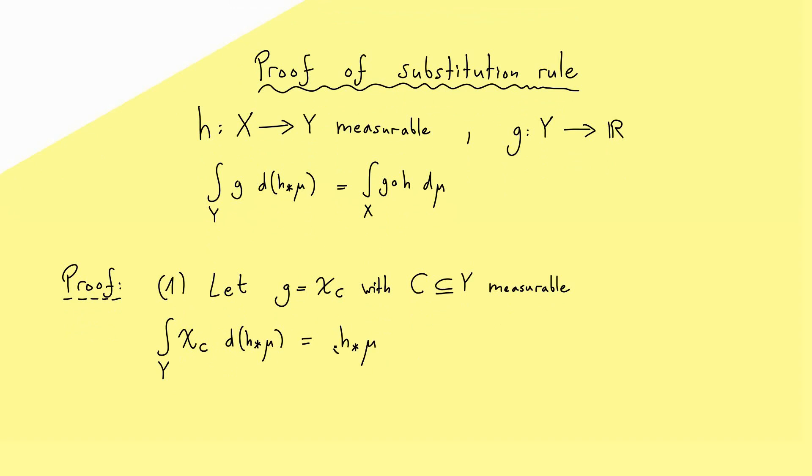And of course, here we have the image measure h_*μ. And now, when you remember the definition of the image measure, you see this is μ of exactly the pre-image of C using h.